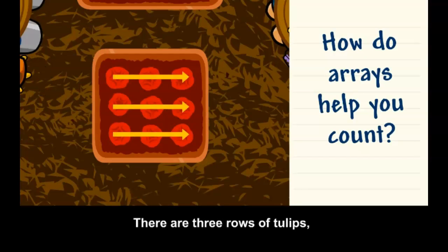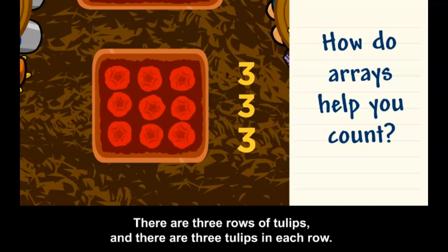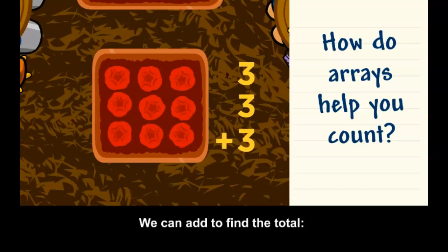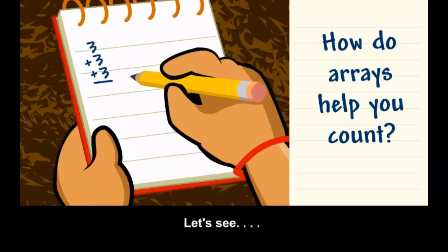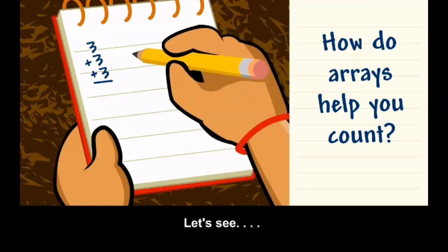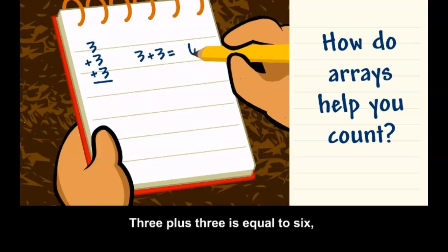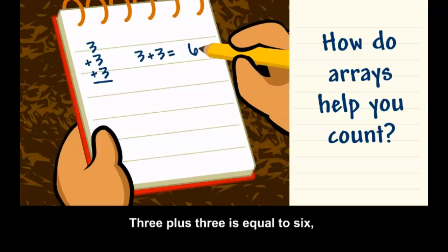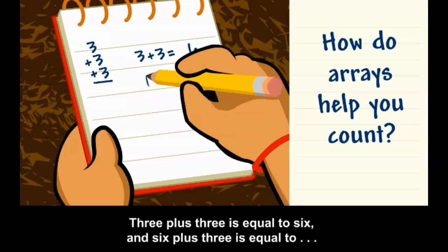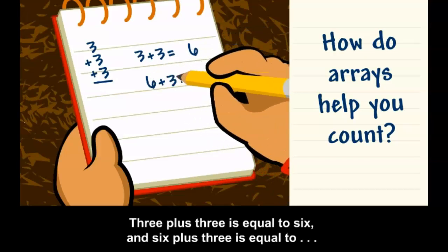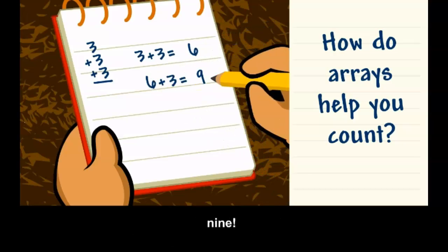There are three rows of tulips, and there are three tulips in each row. We can add to find the total: three plus three plus three. Three plus three is equal to six, and six plus three is equal to nine.